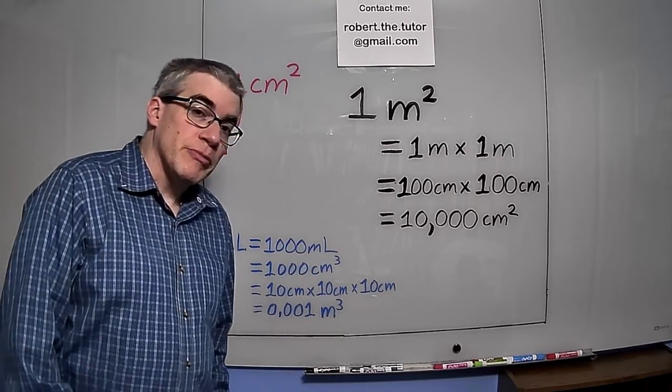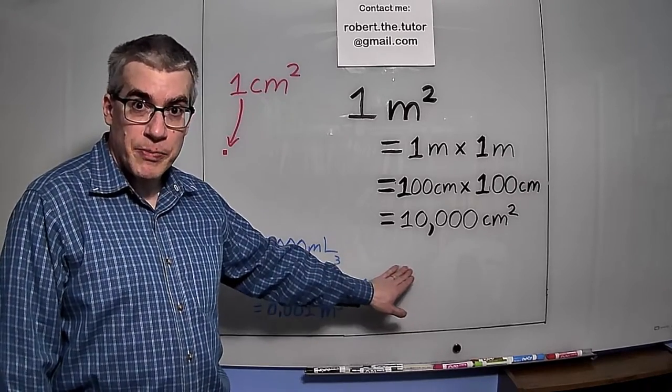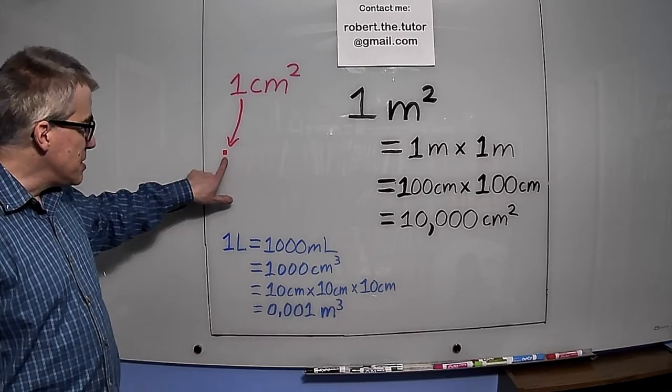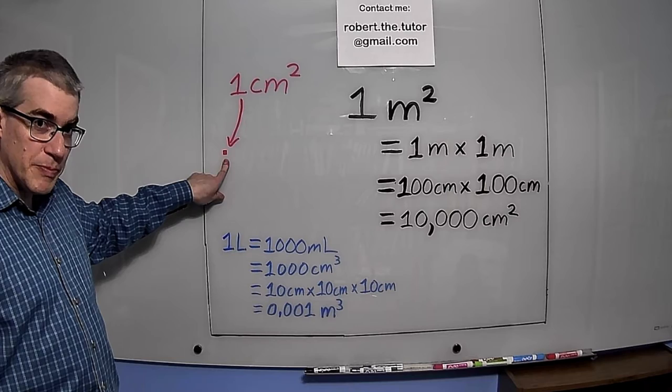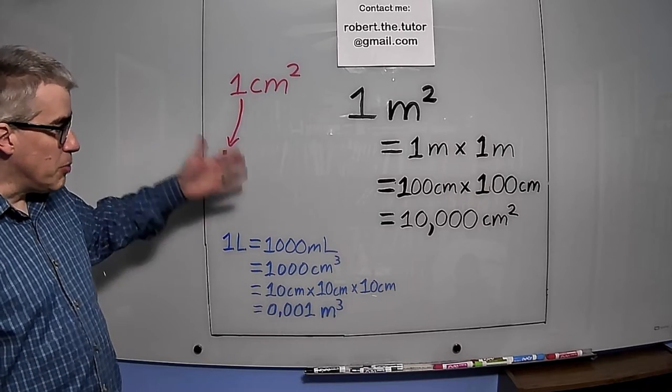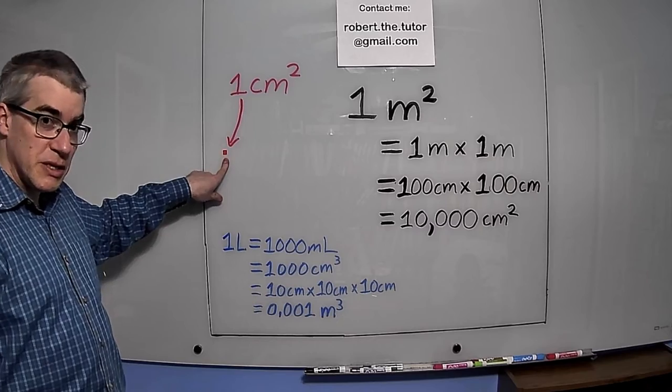So I drew it right here. This giant square here is a square meter. I measured it out. And this tiny little red square is one centimeter by one centimeter. So looking at the board, you can tell at a glance it's going to take a lot more than a hundred of these to fill this up.